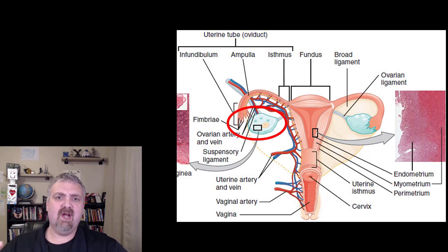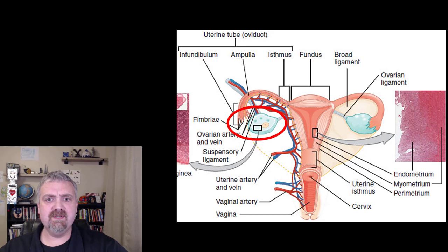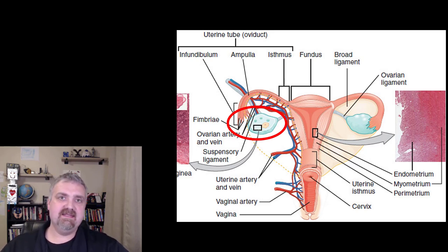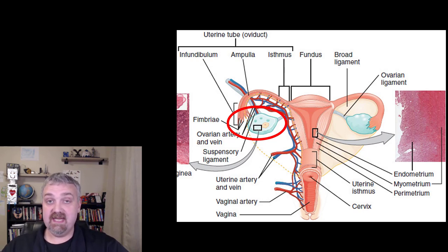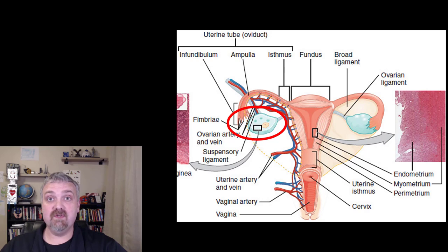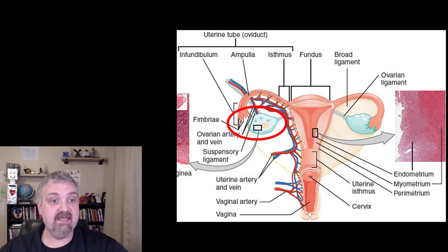First thing to note: we'll talk about the 3 parts of the uterine tube, but the uterine tube is not directly connected to the ovary. That means oocytes could potentially be released and not make it through the uterine tube — they can fall somewhere else in the abdominopelvic cavity, and that does happen.